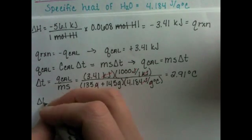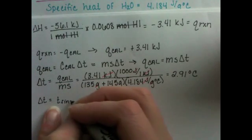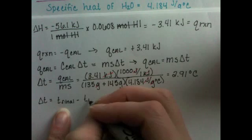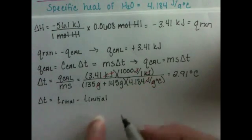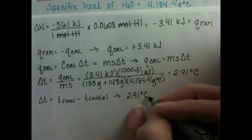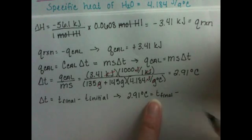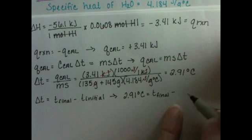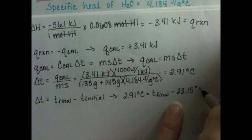Delta T, or delta anything, is final minus initial. Our change in temperature, 2.91 degrees C, then is equal to our unknown final temperature minus our initial temperature of 23.15 degrees C.